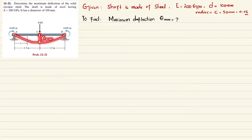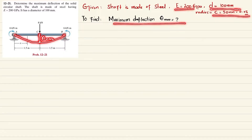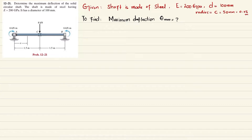The maximum deflection is at theta max. The diameter of the shaft is given, so the radius will be 0.05 m, and E is also given. We will find the maximum deflection in the shaft. If we remove the support at A, there will be a reaction force Ra, and a reaction force at point B which is Rb. Since the load is symmetrical, Ra = Rb = 4 kN.